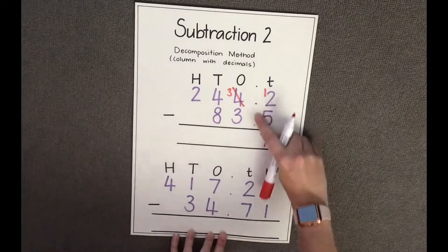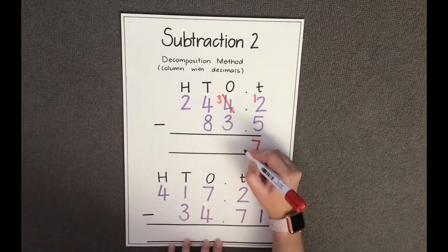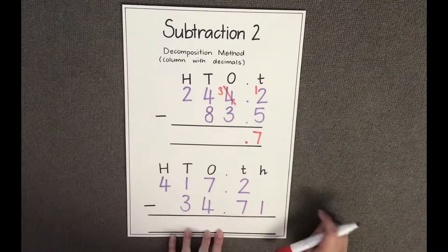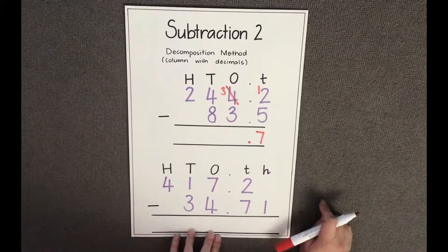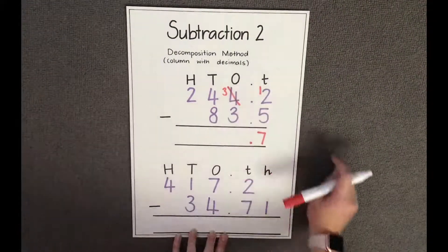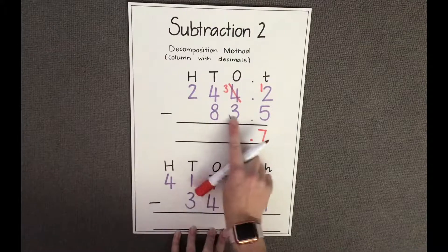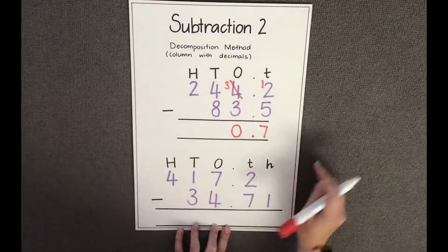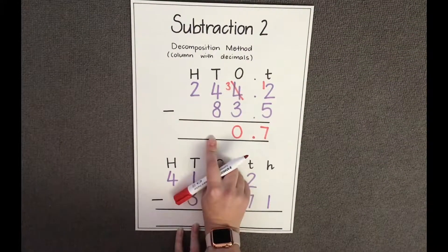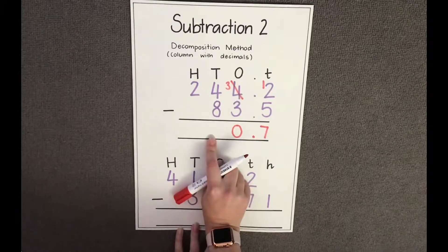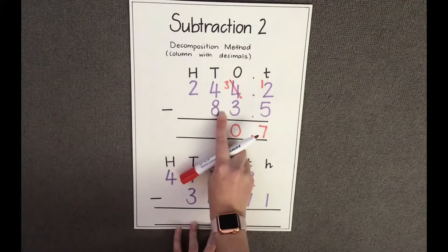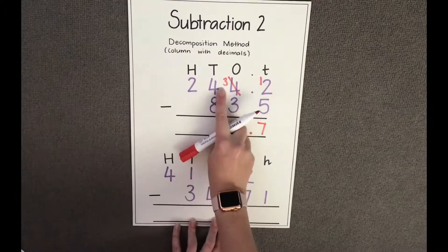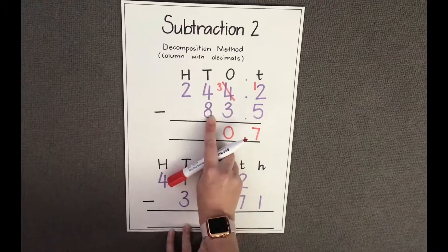When working with decimals we need to make sure that the decimal point in our answer is directly underneath the decimal points above in the question. Now I'm going to subtract my ones: three ones take away three ones gives me zero ones. And now I'm going to subtract my tens. I have four tens take away eight tens, which I cannot do because I do not have enough tens to take away eight.